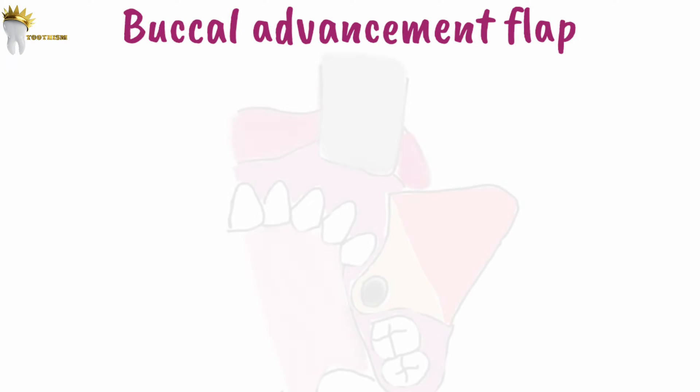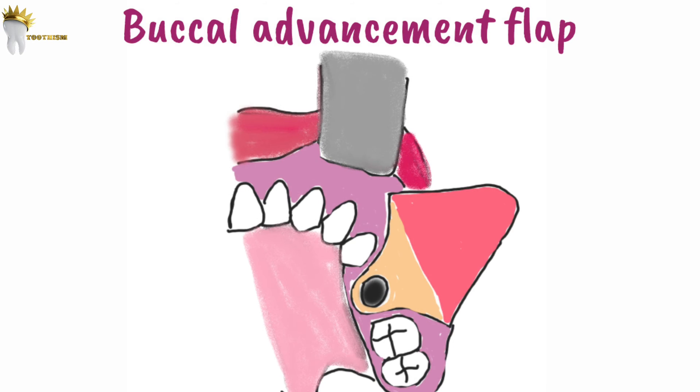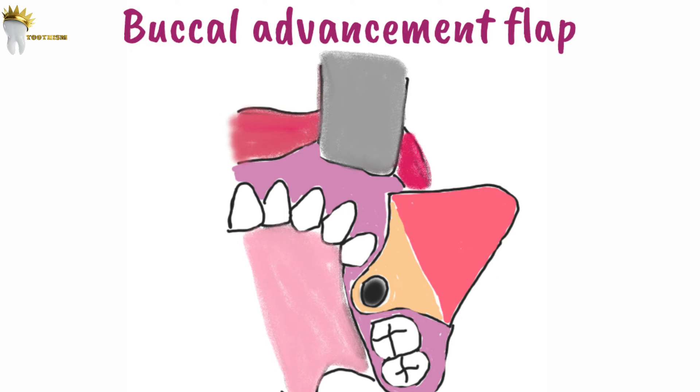For the buccal advancement flap, two buccal divergent vertical incisions are made from the extraction socket extending toward the buccal vestibular fold.